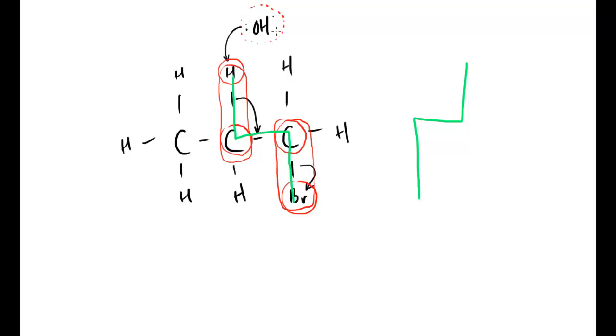And as I said at the start, it's acting as a base. It's accepted this proton here, this hydrogen ion, because the electrons have moved on here. So this left is a hydrogen ion. It accepts them. We produce water here.